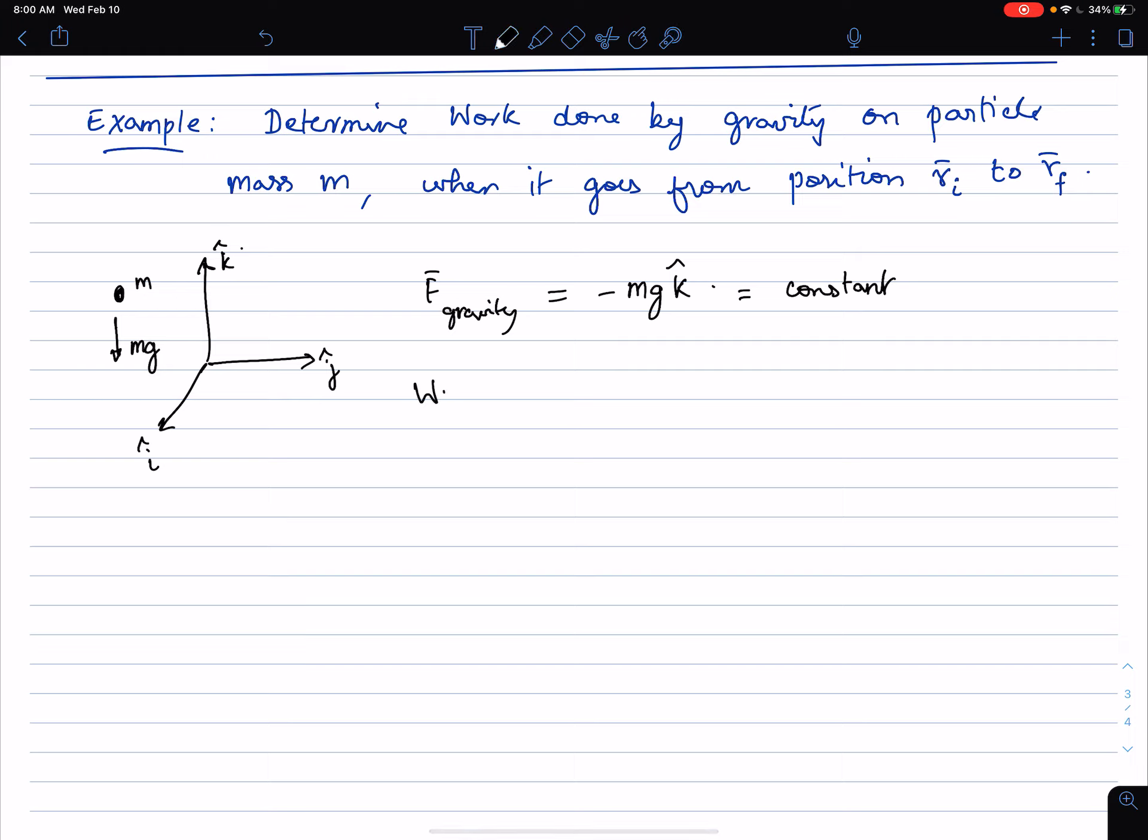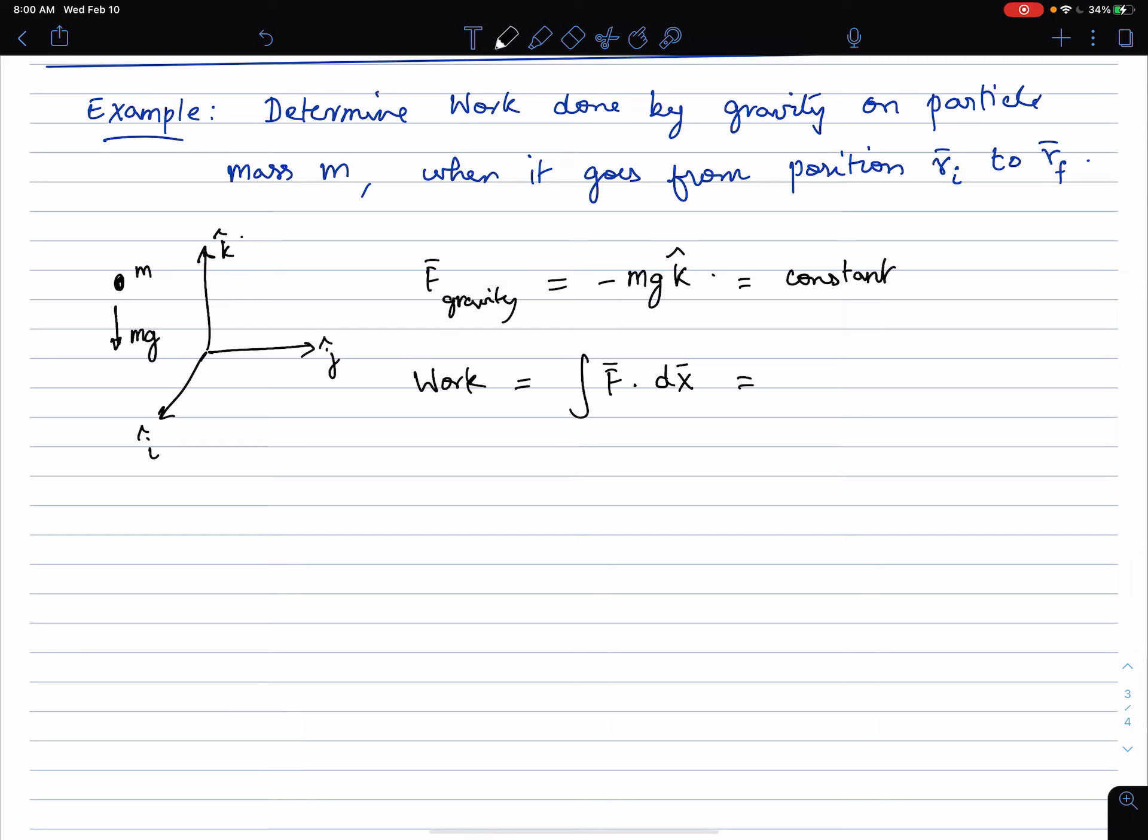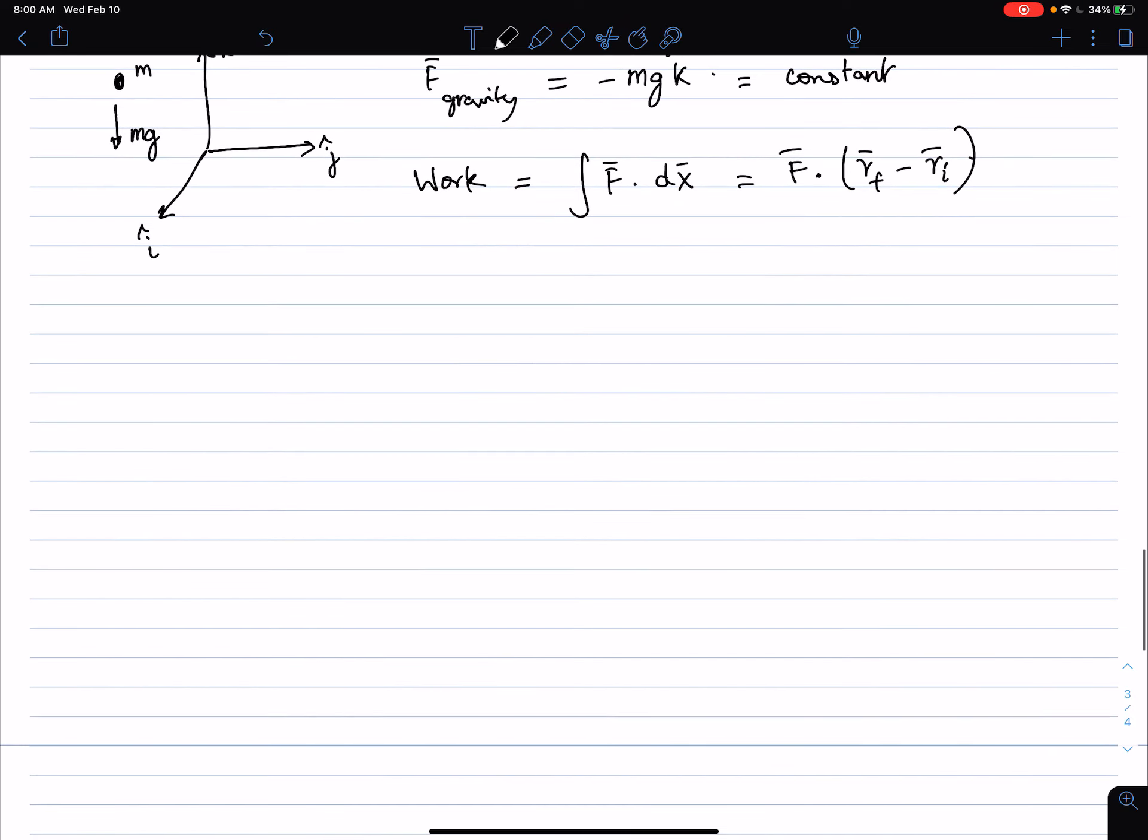So work done is given by, we already saw what the expression for work is for a constant force. It's F dot dx, but we already saw that if we have a constant force, then the work done is basically force dotted with displacement, the vector displacement. Basically, it's F dotted with r final minus r initial. F itself is basically minus mg k dotted with final position minus initial position.